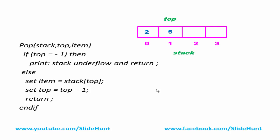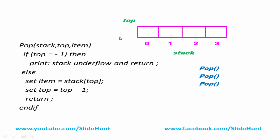Let's see how this algorithm works. When we call the pop function, we check if top equals minus one. Top is at index one, so the condition is false. We delete 5 from there and decrement top by one — now top is at index zero. We pop another element: delete 2 from index zero and decrement top by one. One important note: when we pop an element we don't need to pass any argument, because pop always removes the top element. Now top equals minus one, and if we try to delete another element it shows stack underflow.